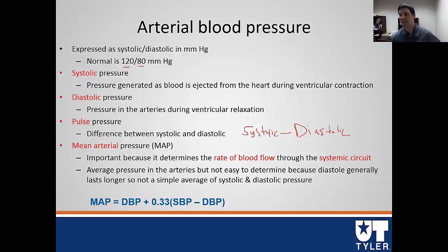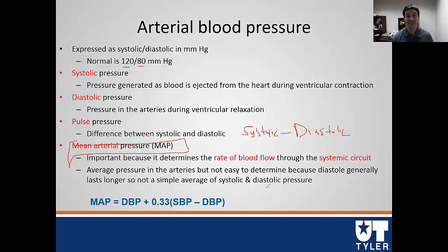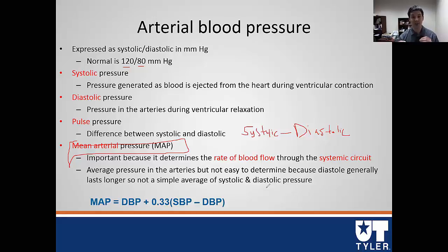Another measure commonly used is mean arterial pressure, often abbreviated MAP. It's important because it ultimately determines the rate of flow throughout the systemic circuit — it tells us the average pressure. As we talked about with afterload, if average pressure goes up, then blood flow goes down. If average pressure in the arteries goes down, then flow goes up.